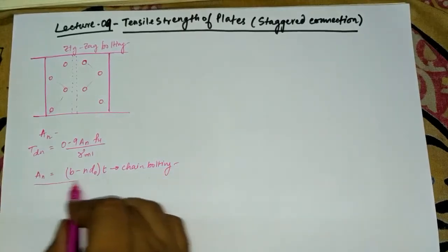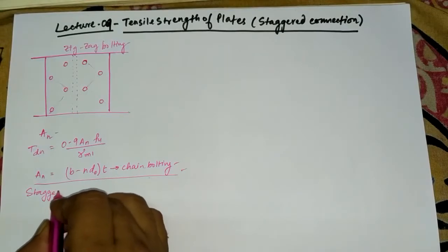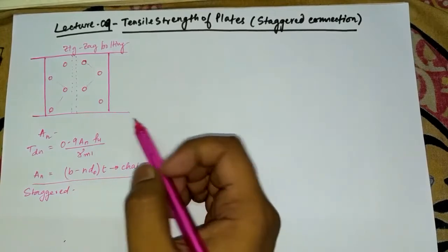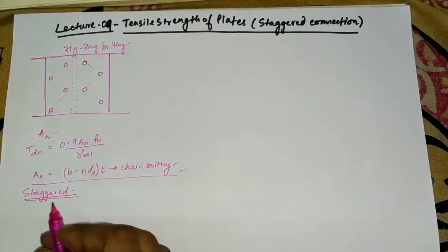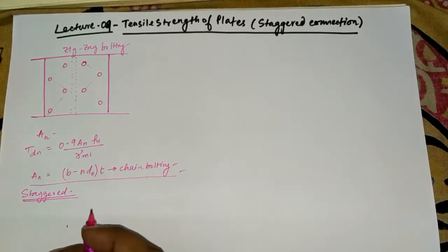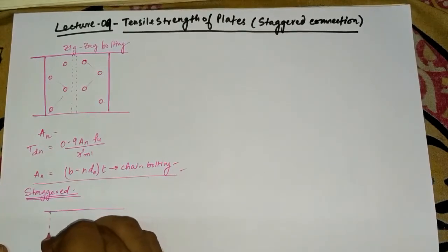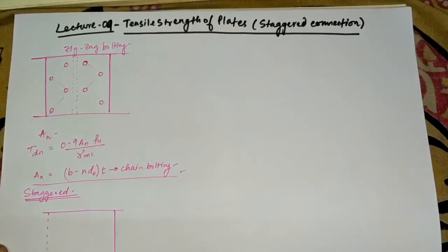For a staggered connection, we will use a different formula to determine the effective net area. Let me show you another diagram — let us suppose the part of a lap joint to explain this.